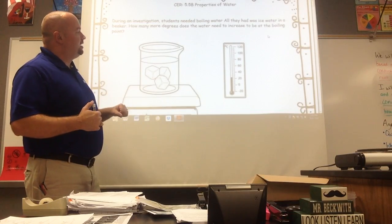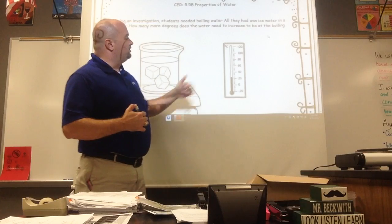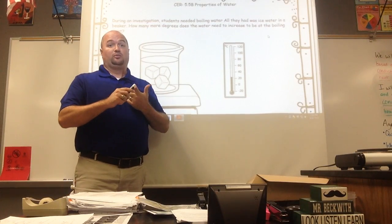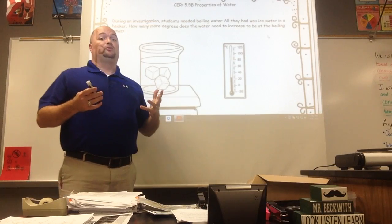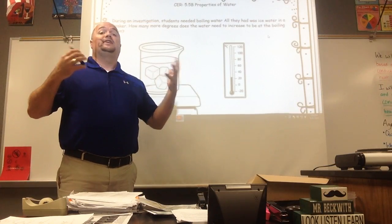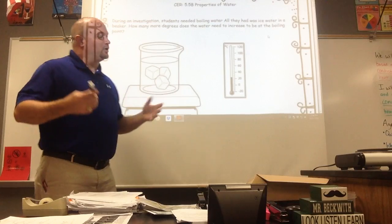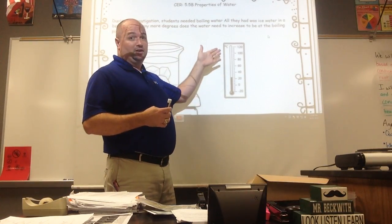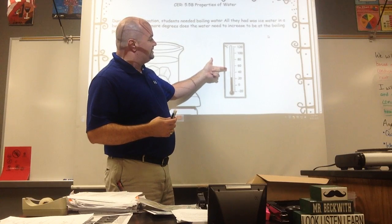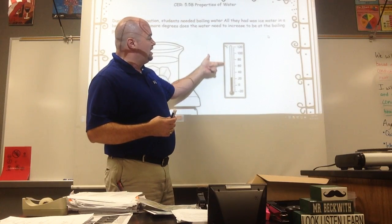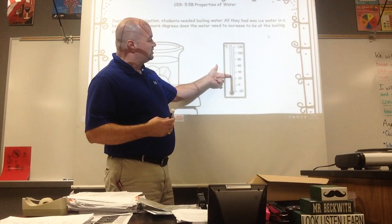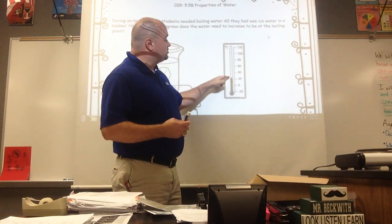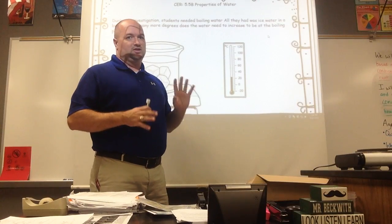I've got my picture of a beaker on a hot plate and a thermometer that gives me the starting temperature. I've got to know a couple of things. First, I've got to know what the boiling point of water is — and that's 100 degrees Celsius. Then I've got to know how to read this particular thermometer. This thermometer can be a little tricky because it's not going up by tens; it's actually going up by twenties. So each of the little hash marks in between actually represents four degrees, not two. So my starting temperature here is 24 degrees.